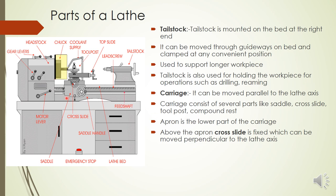Just above the apron we have the cross slide, which can move perpendicular to the lathe axis. There are two hand wheels — a larger one for the longitudinal (x-direction) motion of the entire carriage along the lathe guideways, and a smaller one for the perpendicular motion of the cross slide.